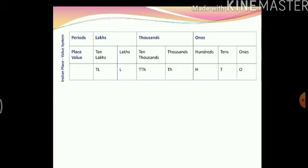First we have the Indian place value system. In the first row I have written down the periods, and in the second row I have written down the place values. In the first period, that is ones, we have three place values: ones, tens and hundreds. In the second period, the thousands period, we have two place values: thousands and ten thousands. And in the third period, the lakhs period, we have two place values: lakhs and ten lakhs. This is the usual place value system that we use and have been using in this chapter.